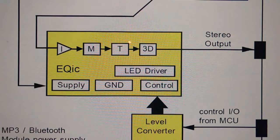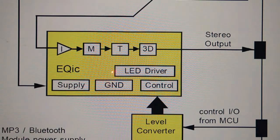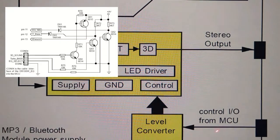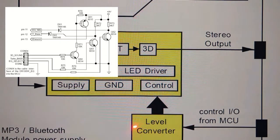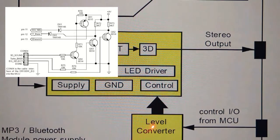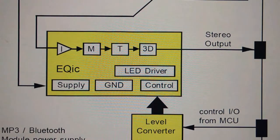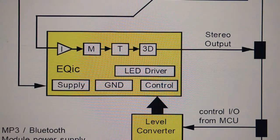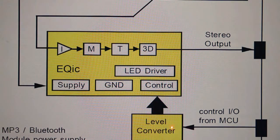Because the EQIC solution operates at high voltage — that is 9 volts from the PSU splitter — and the controller from the microcontroller is 5 volts, there is a voltage-level mismatch between the EQIC and the microcontroller. So we need a level converter to translate the voltage from 5 volts to 9 volts, or vice versa from 9 volts to 5 volts. That is basically the purpose of the level converter.